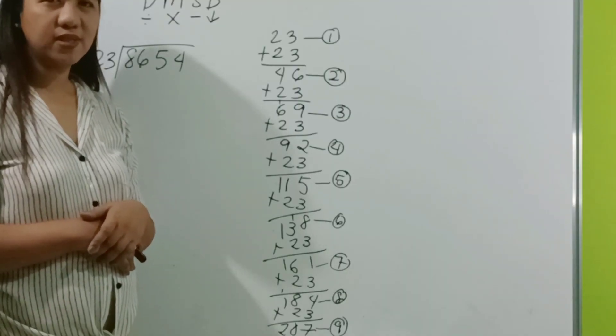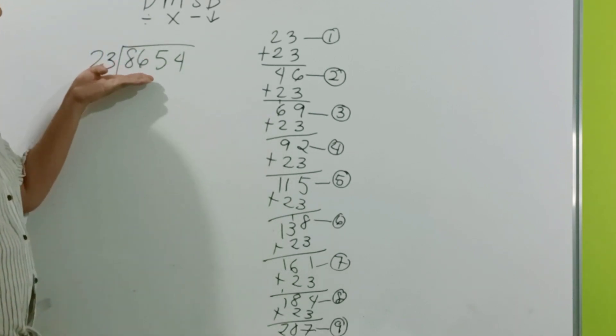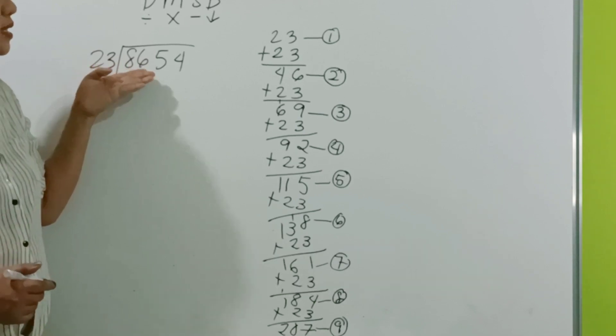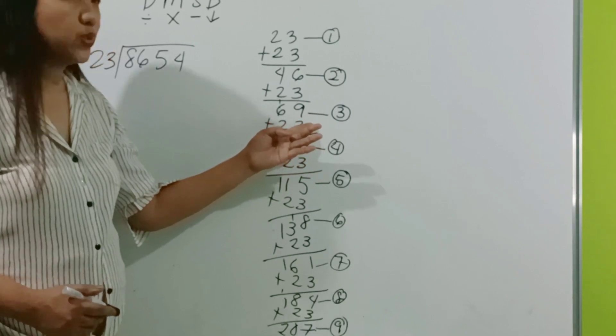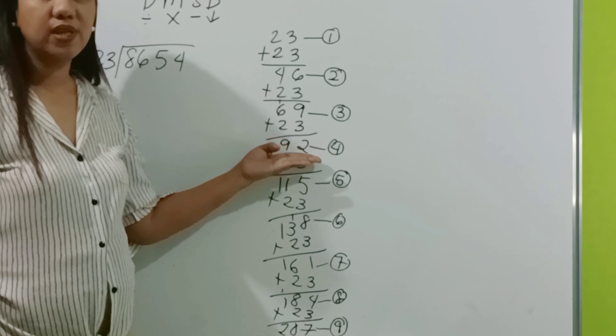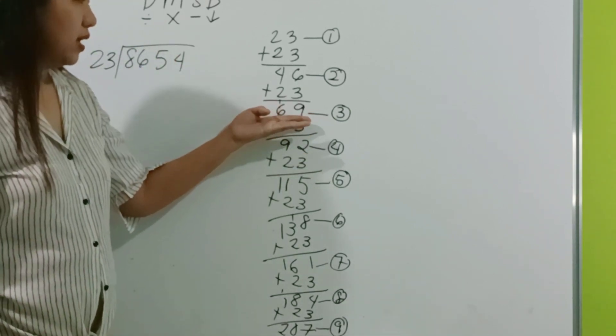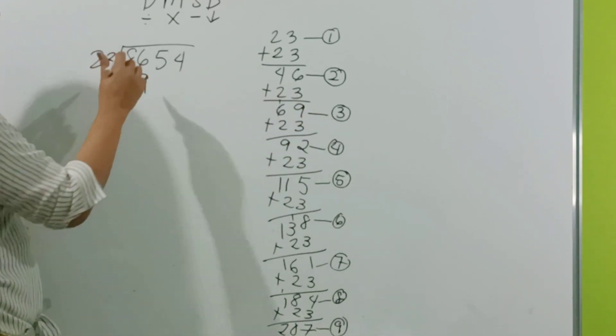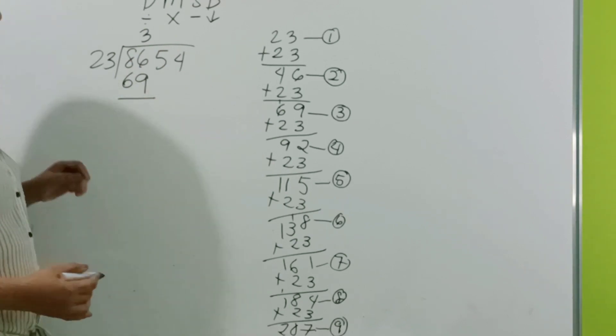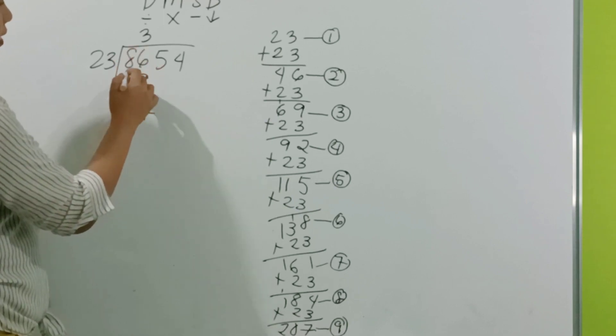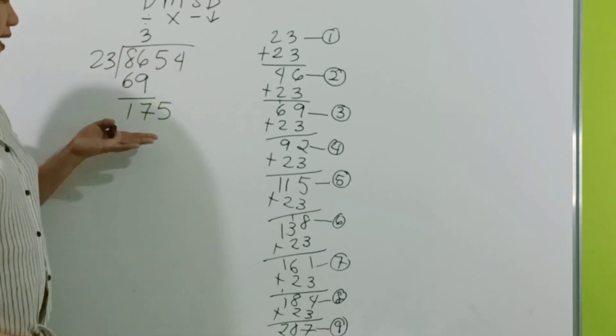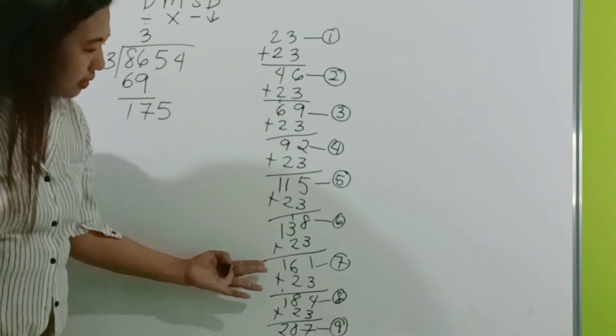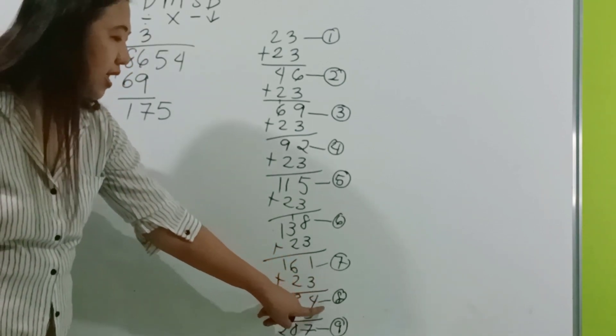So, after adding for 9 times, mark the numbers up. So, we have 1 to 9. Why 9? Because 9 is the maximum digit that you could put as an answer. Now that we have marked up all of the numbers, we have to look into the marked numbers, which is less than or equal to 86. So, we choose 69 because this is less than or equal to 86.